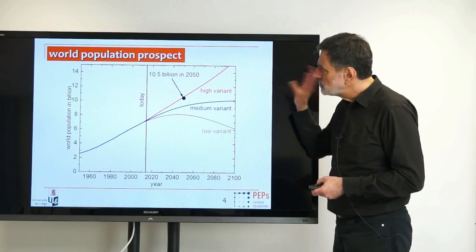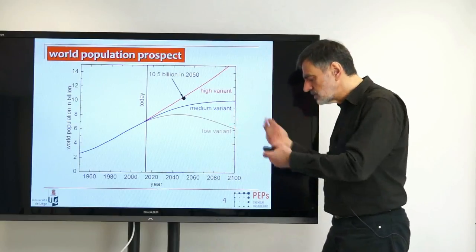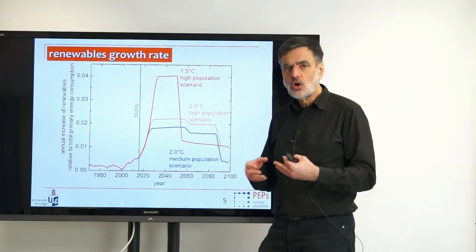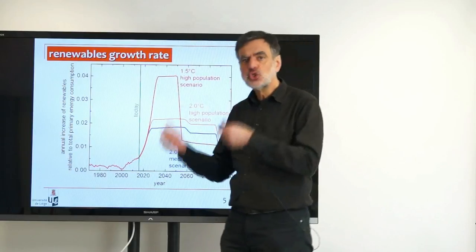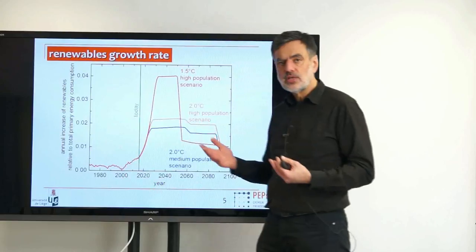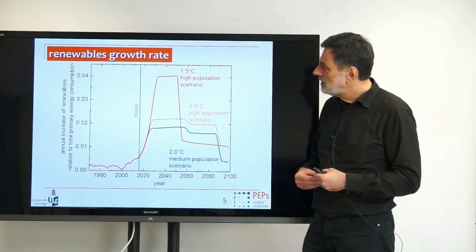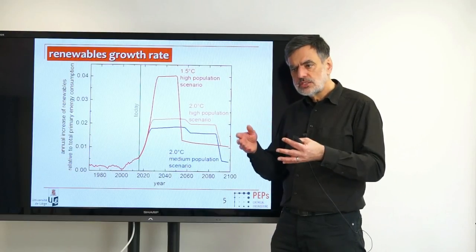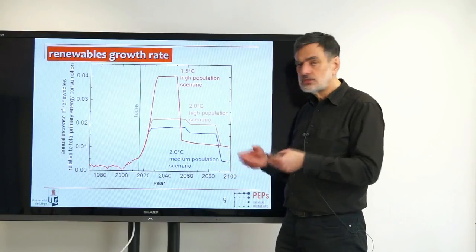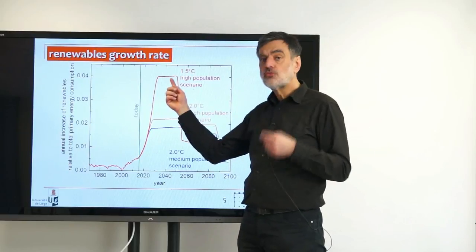The key question is: what effort do we have to take to stay within the given climate limits? I express this as the annual increase of renewables relative to total primary energy consumption — in other words, how much of our fossil energy do we replace by renewables per year, at rates of 1%, 2%, 3%, and 4%. If we want to reach the 1.5°C goal with the high population scenario, we have to replace roughly 4% annually.